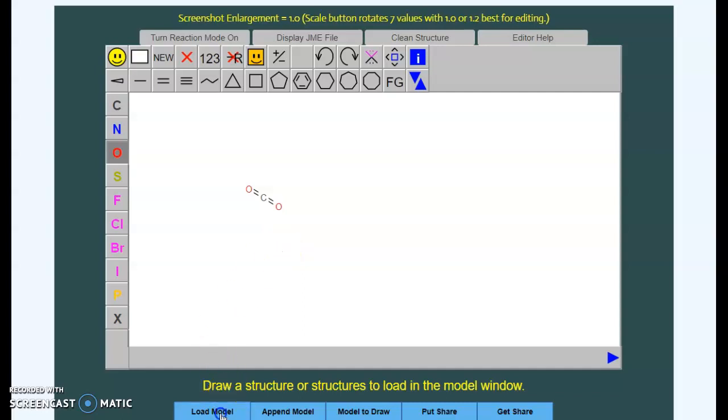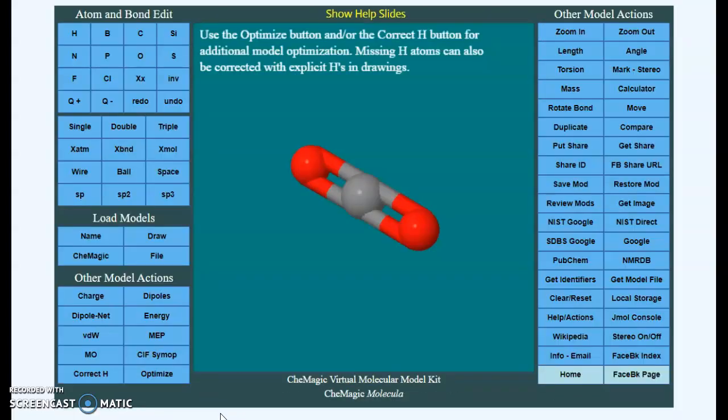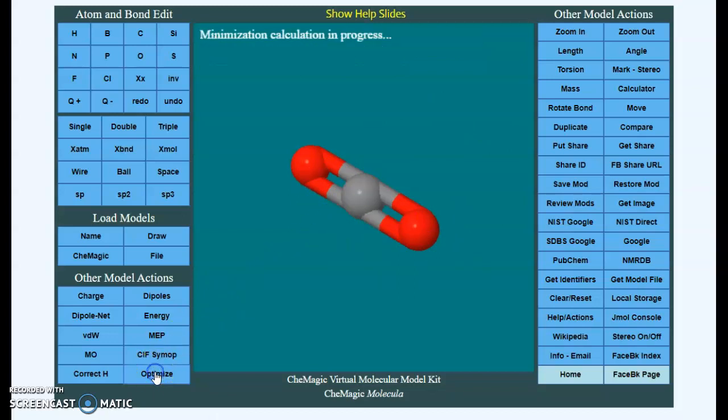Now we want to load the model. And here is our model. Before we make any measurements, we want to make sure that we click the optimize button. This makes sure that the molecule is in the proper shape and the bond lengths are appropriate. You can click and drag to turn your molecule around if you would like.